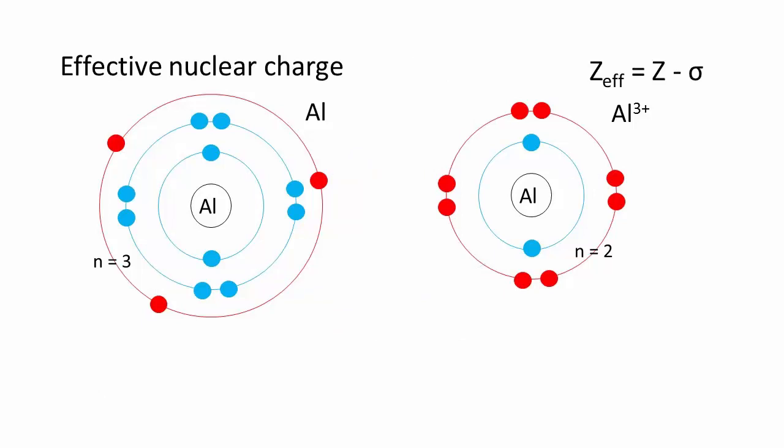Consider the aluminum atom and the aluminum three plus cation. The atom has a 1s² 2s² 2p⁶ 3s² 3p¹ configuration, while the cation has a 1s² 2s² 2p⁶ configuration. For the atom, the valence is n equals 3, while for the cation, it's n equals 2.